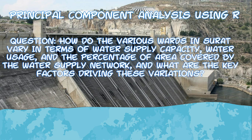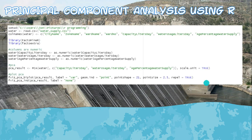I will use principal component analysis in R. PCA is a popular tool used in multivariate statistical analysis. Here's the code I wrote: I set the columns as numeric, used the factorextra library to load the data sets, and then ran the principal component analysis.